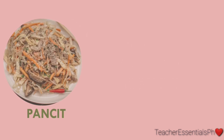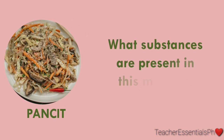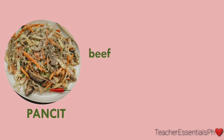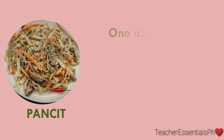How about pancit? What substances are present in this mixture? There is beef, carrots, chili, cabbage, and many more. So, does it have one appearance? No, it doesn't have one appearance.